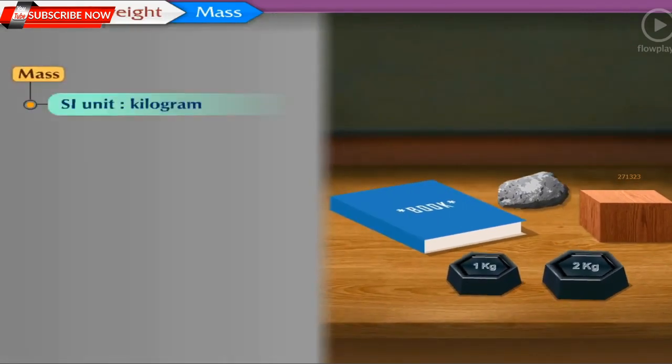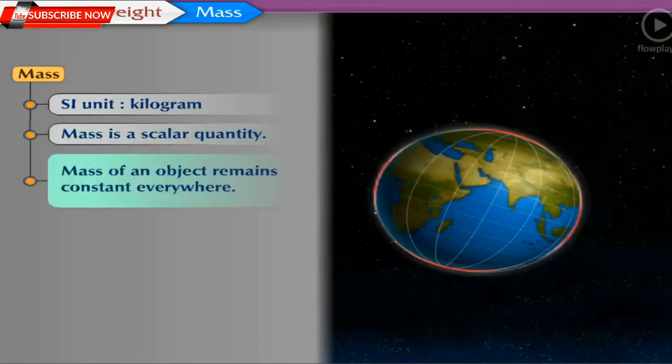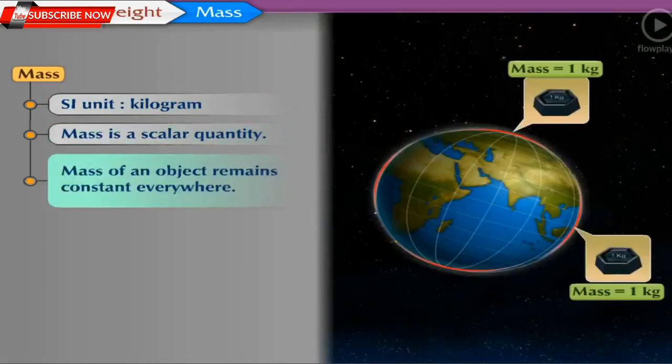The SI unit of mass is kilogram. It is a scalar quantity. The mass of the object remains constant everywhere.